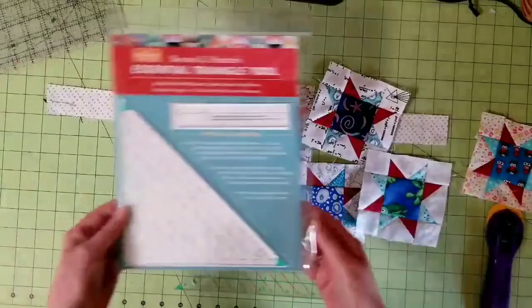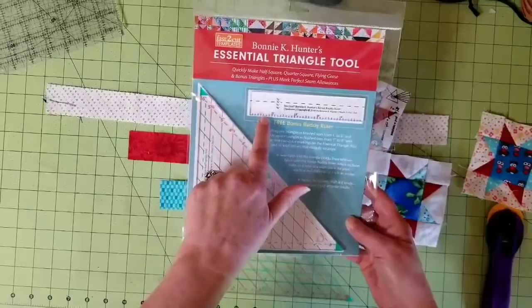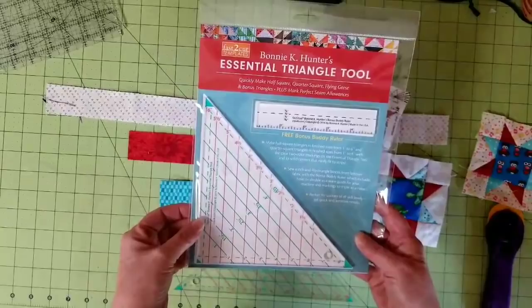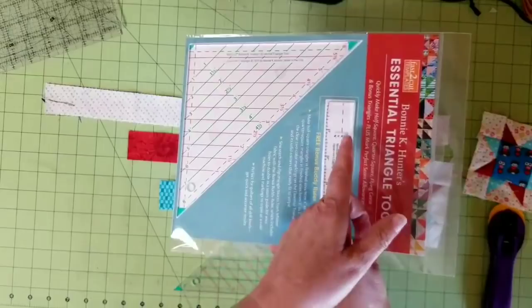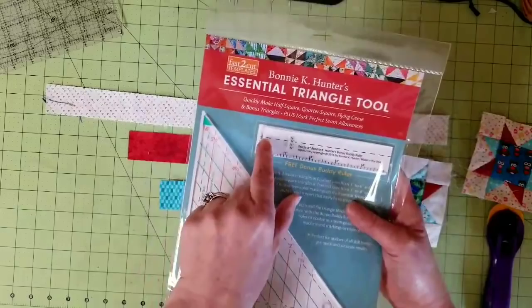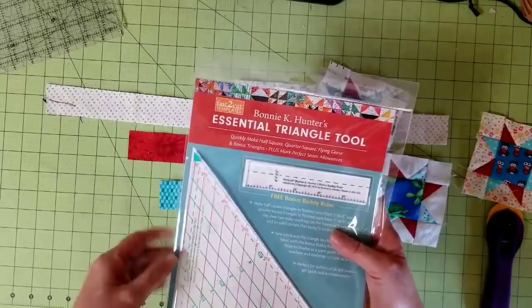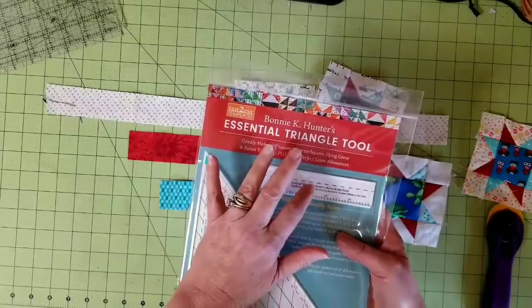The package looks just like this when you receive it. When you purchase your essential triangle tool, it comes with a fold-out booklet of instructions with full-color photos, and you'll also get a free bonus buddy ruler with this that will help you set your seam allowance.